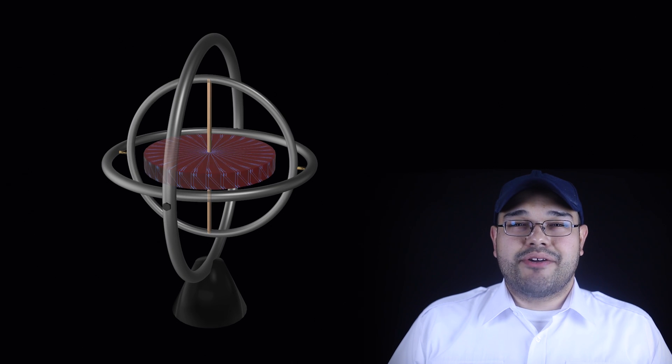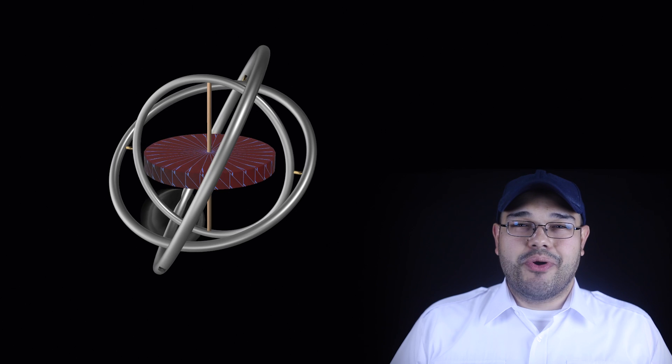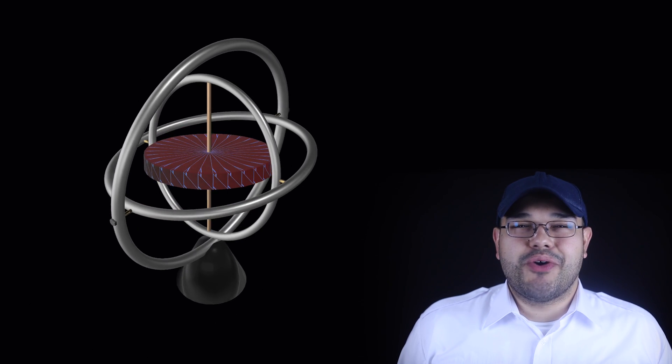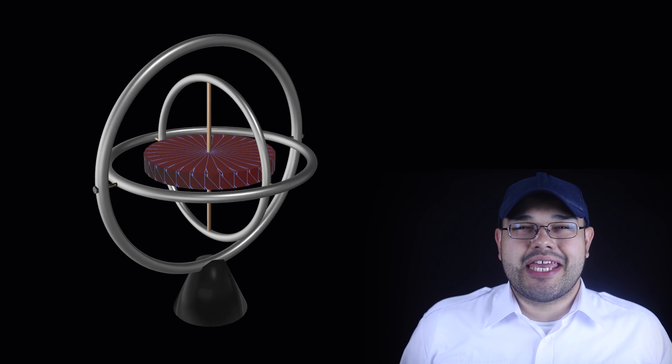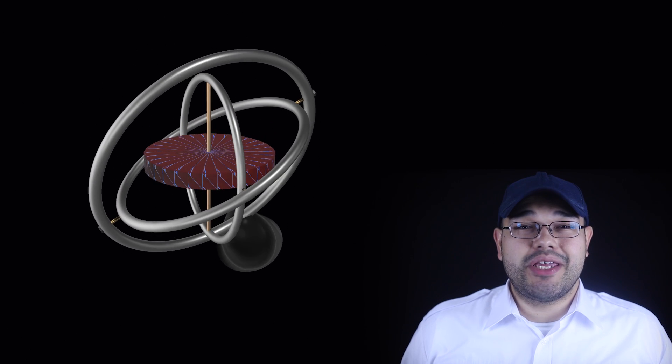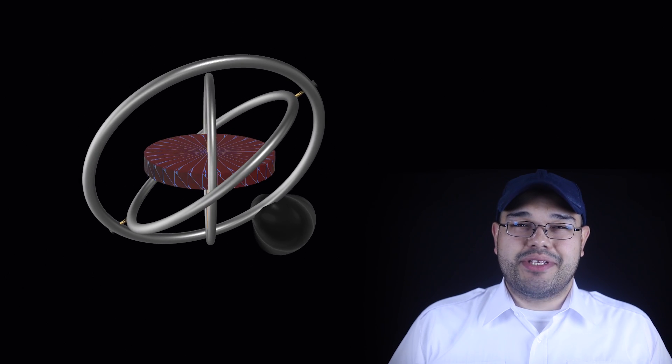This means that the gyro can be mounted in gimbals and as the base is rotated around, the gyro will remain in place. Rigidity in space is useful because the orientation of the gyro can be used by mechanical and electrical systems to determine the orientation of the base, which in a flight instrument is mounted to the airframe.